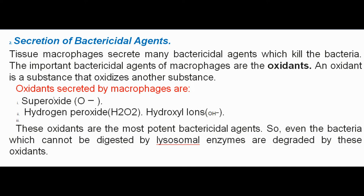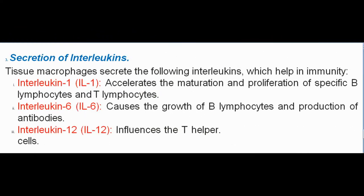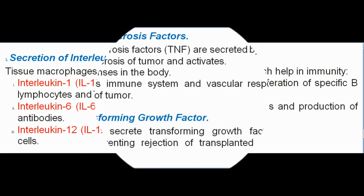Even bacteria which cannot be digested by lysosomal enzymes are degraded by these oxidants. Secretion of interleukins: Tissue macrophages secrete interleukins which help in immunity. Interleukin-1 (IL-1) accelerates the maturation and proliferation of specific B lymphocytes and T lymphocytes. Interleukin-6 (IL-6) causes the growth of B lymphocytes and production of antibodies. Interleukin-12 (IL-12) influences the T helper cells.